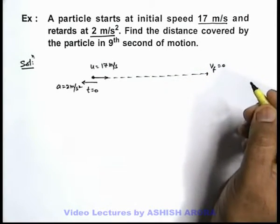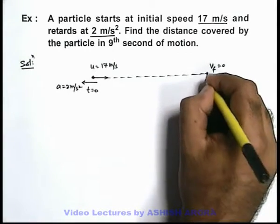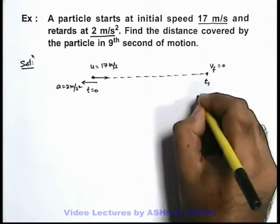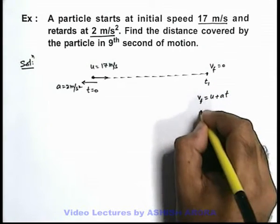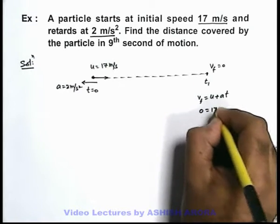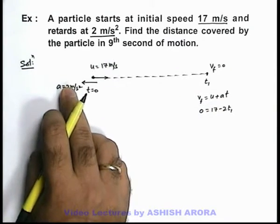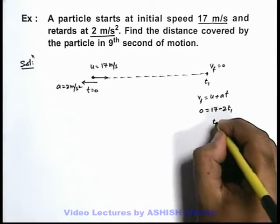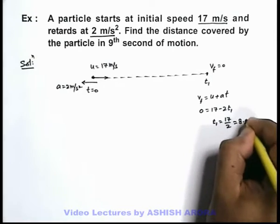We can easily calculate the time at which its final velocity becomes zero. Using the equation v final equals u plus at, zero equals 17 minus 2t₁. So the time t₁ is 17 by 2, that is 8.5 seconds.